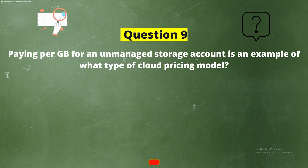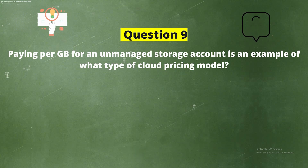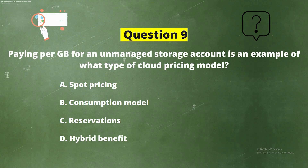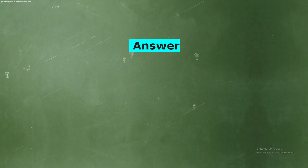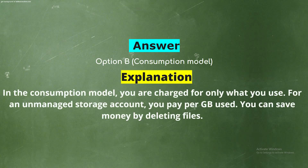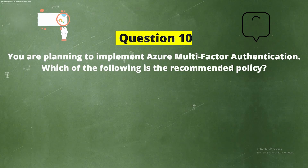Question 9: Paying per GB for an unmanaged storage account is an example of what type of cloud pricing model? Options: Option A - Spot Pricing, Option B - Consumption Model, Option C - Reservations, Option D - Hybrid Benefit. The correct answer is Option B - Consumption Model. Explanation: In the consumption model, you are charged for only what you use. For an unmanaged storage account, you pay per GB used, and you can save money by deleting files.